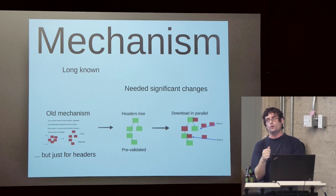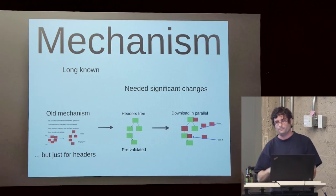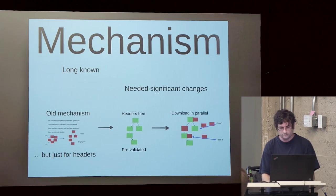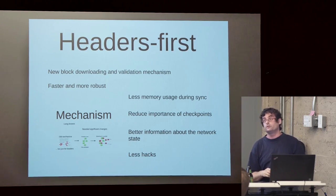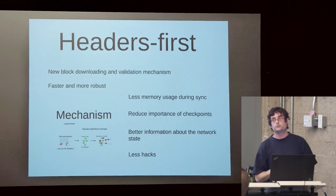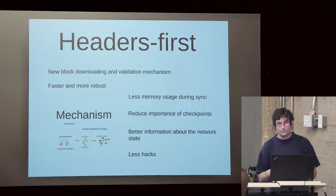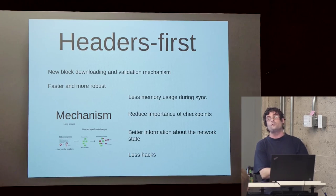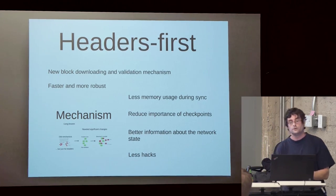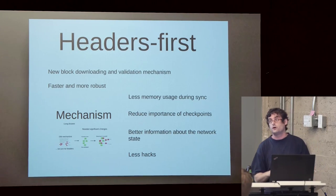An effect of this is your blocks end up on disk out of order — some software may need changes for this. We do try to limit how much they go out of order; we use a window of around a thousand blocks, so you never download a block more than a thousand ahead of the latest you have validated. The result is less memory used during synchronization, and we no longer have orphan blocks — blocks without a parent. These don't exist anymore because we only ever download a block about which we have already validated headers, so it can be immediately stored to disk. With a few command-line flags, you can run a full node synchronized in under 500 megabytes.